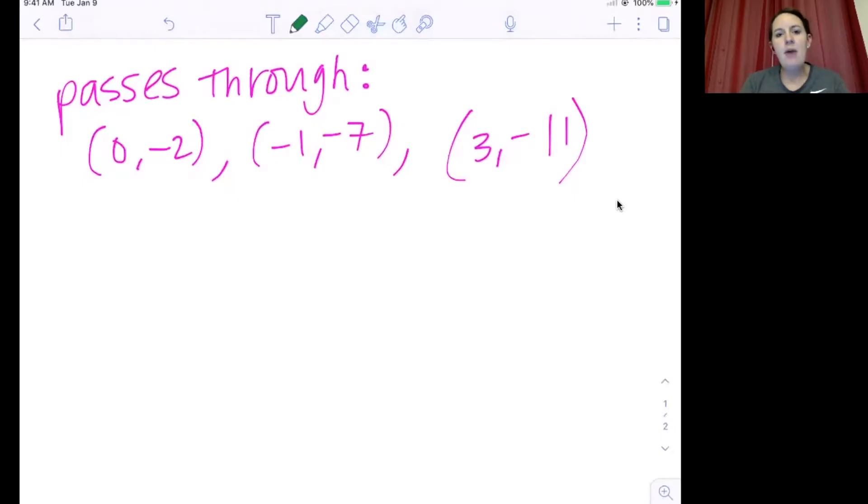This is a quick lesson about how we can use Desmos to find a line of best fit for a parabola passing through the points (0, -2), (-1, -7), and (3, -11).